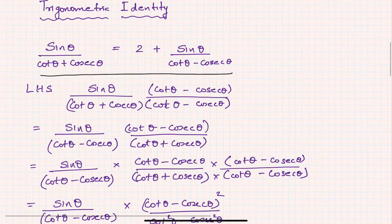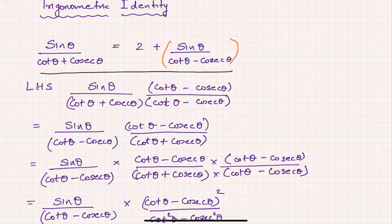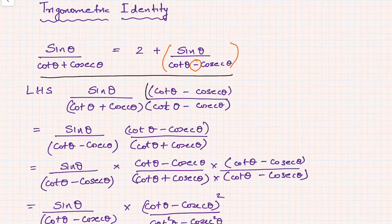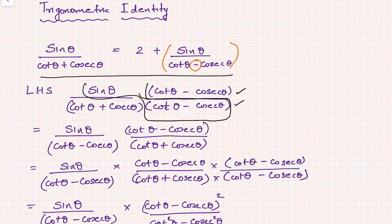In the first approach, we take the LHS: sin θ/(cot θ + cosec θ). Notice that on the RHS we have the same trigonometric ratios but with a minus sign in the denominator instead of plus. So we introduce that term in the LHS. I am going to multiply and divide sin θ/(cot θ + cosec θ) by (cot θ - cosec θ), so we get the term sin θ · (cot θ - cosec θ) which is required on the RHS. I'll segregate that.